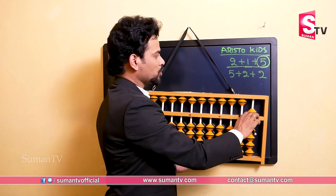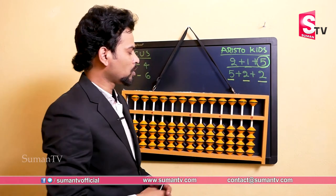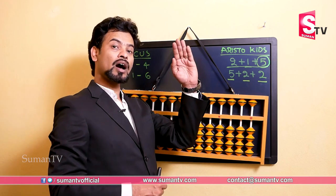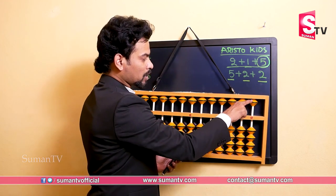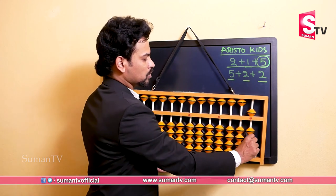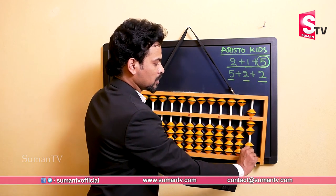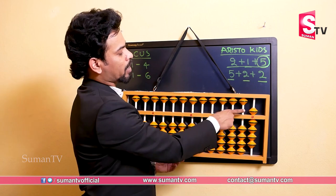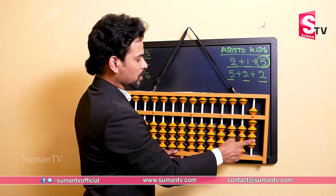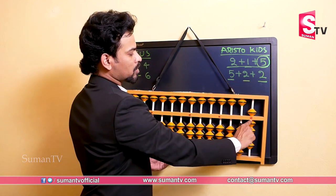Let's do five plus two plus two. First we do plus five from the upper side. Then plus two — that is seven. Then again plus two. Counting: five plus one six, plus one seven, plus one eight, plus one nine. The answer is nine.